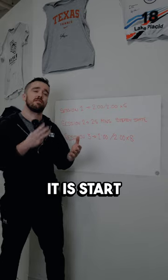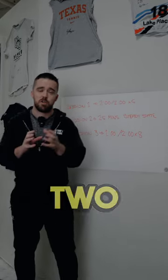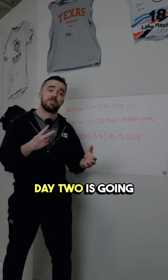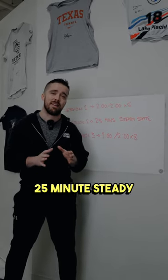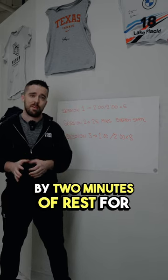Start with three sessions a week. Day one: two minutes of max intensity work followed by two minutes of rest for five rounds. Day two: a 25-minute steady state session. Day three: one minute of work followed by two minutes of rest for eight rounds.